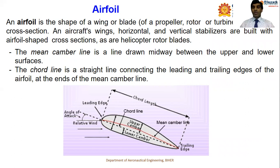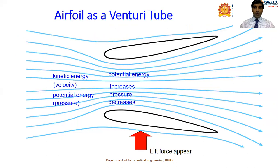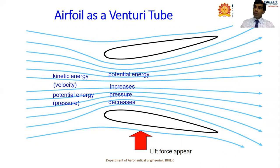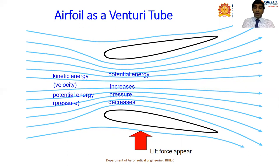Considering the airfoil as a venturi tube: there are upper and lower surfaces of the wing. The flow of air is greater over the upper surface of the airfoil — because flow is more, pressure is less and velocity is more. On the lower surface, pressure is higher and velocity is less. Because of this, kinetic energy and potential energy change. On the upper surface, kinetic energy increases due to higher velocity, while pressure decreases. The resulting lift force pushes the aircraft upward.